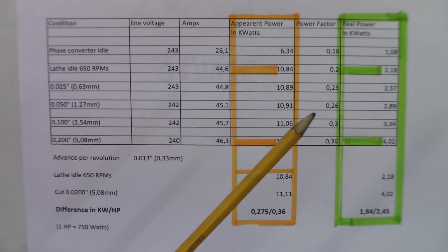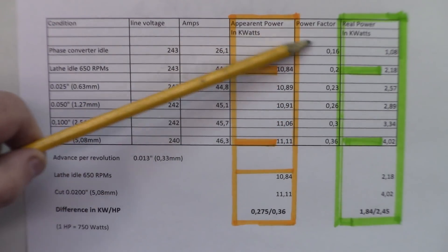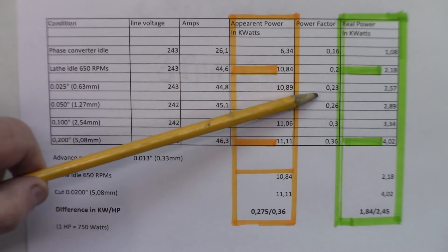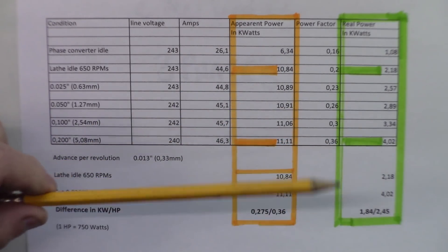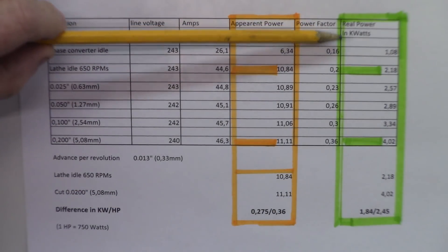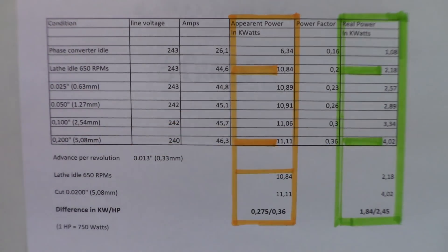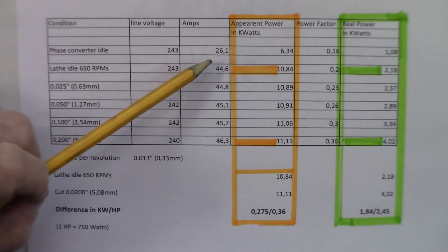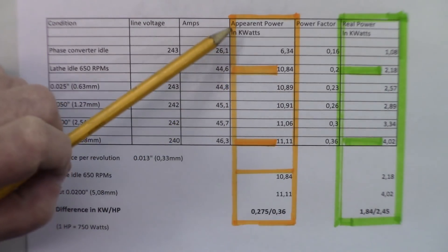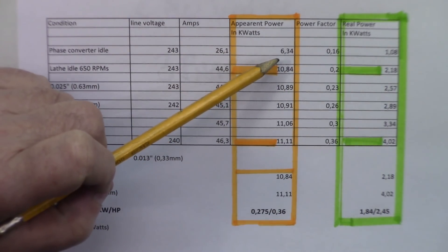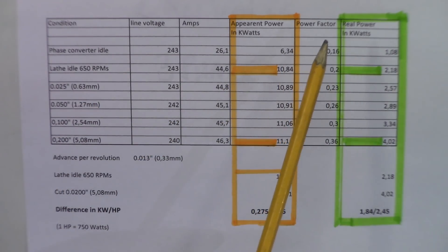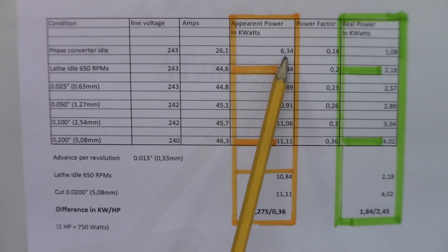That's where the power monitor comes into play. That's going to give you a power factor here of the different conditions according to the different phase shifting into the system. So this will give you, in the last column there, the real power drawn in every condition. So what I did here, let's say you're taking the phase converter idling, it's 243 volts multiplied by 26 amps, it's going to give you an apparent 6.34 kilowatts. This is a lot of power, but if you get the conversion with the power factor of 0.16, you will get, in fact, a real power consumption of 1.08, almost 1.1 kilowatt. So this is quite less than this figure here.